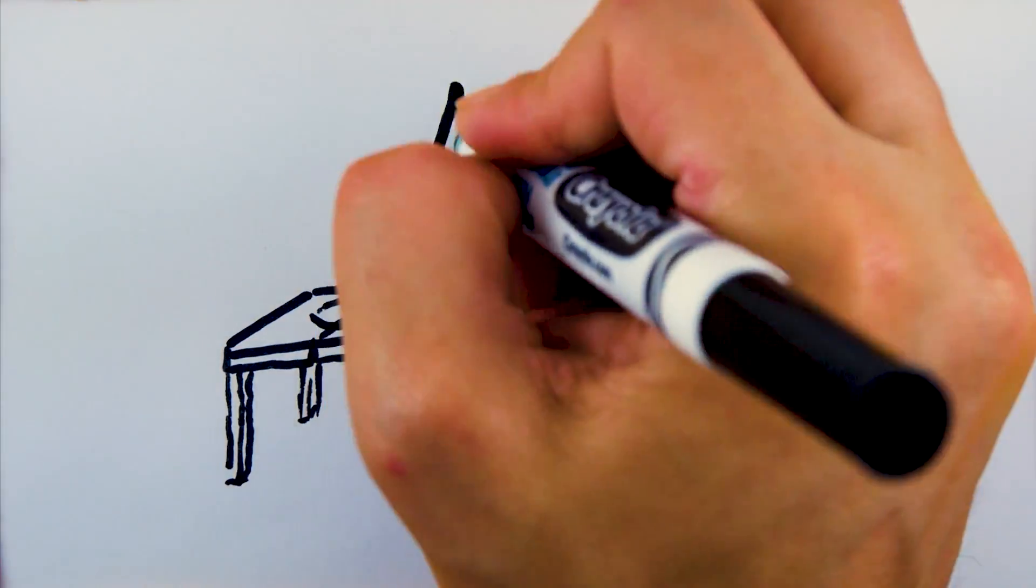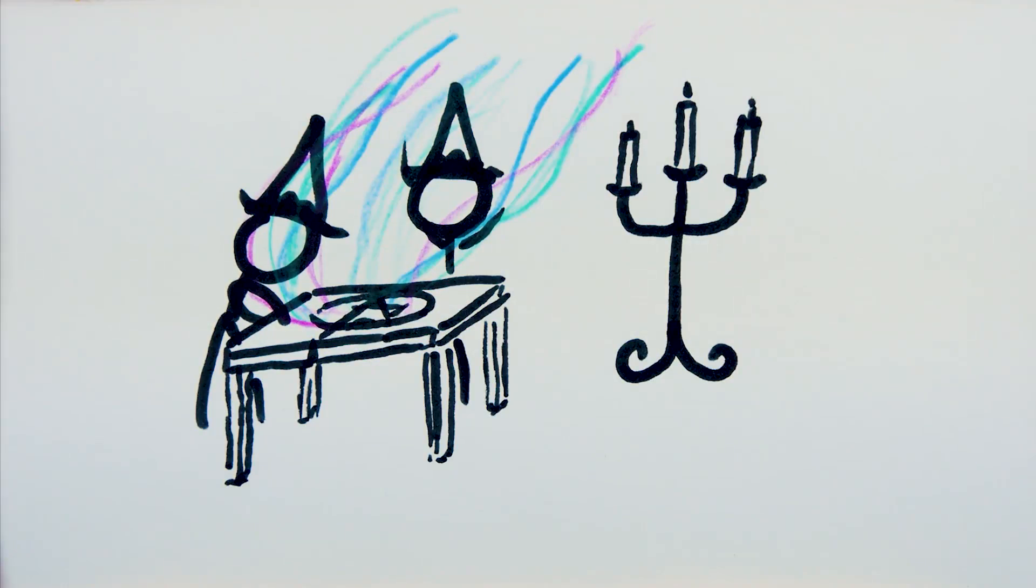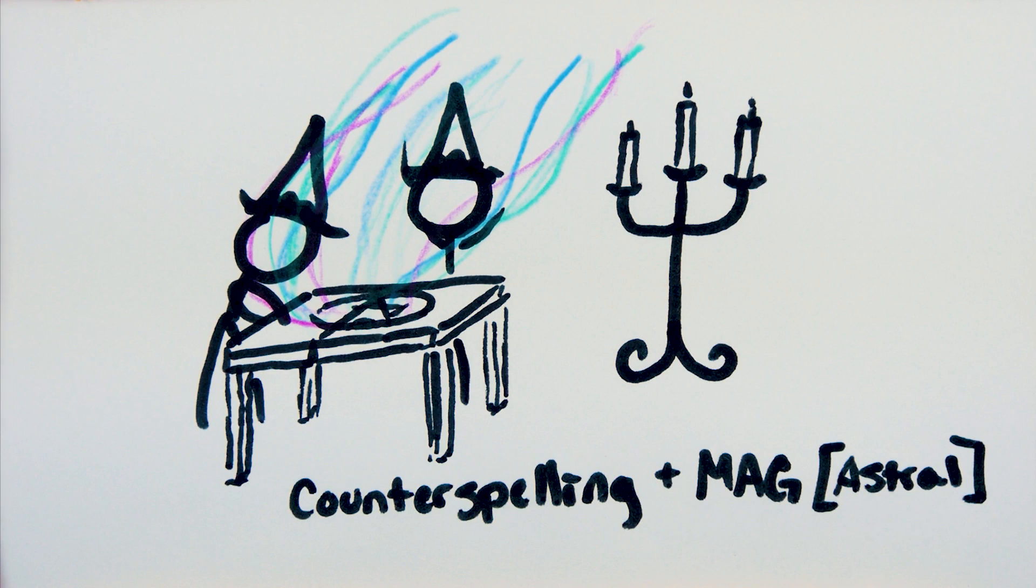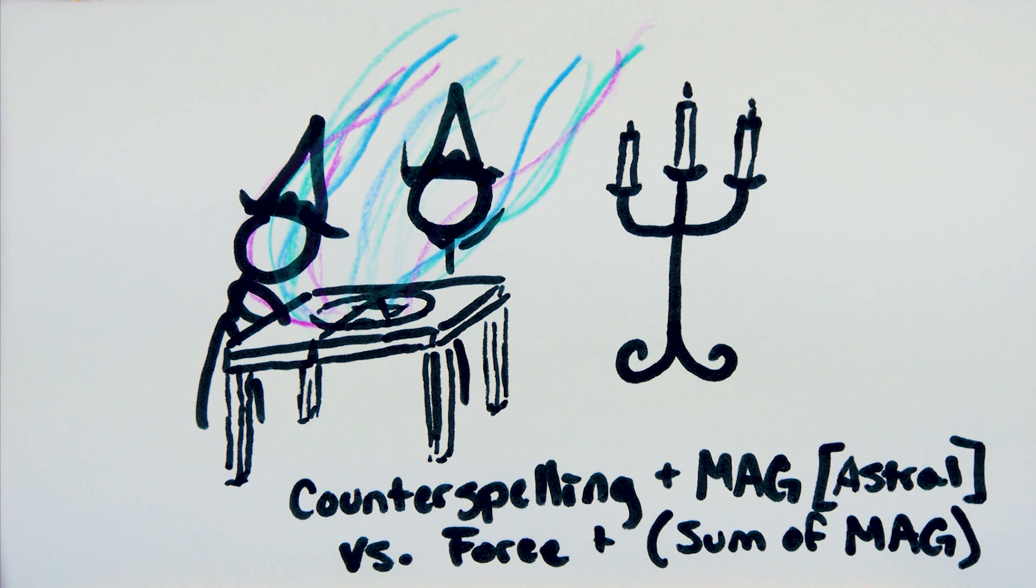Ritual magic can be dispelled if it contains the keyword spell and is an ongoing effect. Make an opposed counterspelling plus magic test using the character's astral limit, against a dice pool equal to the sum of the force of the spell, plus the total of the magic ratings of all the ritual participants. Every net hit reduces the net hits from the ritual's sealing step by one. You take drain equal to twice the hits on the opposing test.